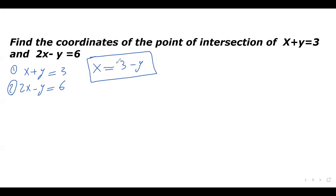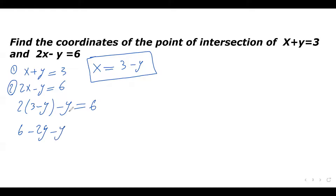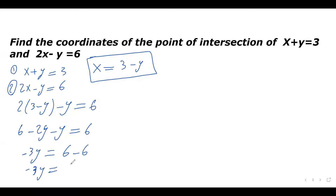Step two: substitute this expression for x into the second equation. In the second equation, replace x with (3 minus y): 2 times (3 minus y) minus y equals 6. Distribute the 2 into the bracket: 2 times 3 is 6, 2 times negative y is negative 2y, and we have another negative y on the left side, equals 6. Collect like terms: negative 2y and negative y add up to negative 3y on the left, equals 6. Move the positive 6 from the left to the right — it becomes negative 6. So negative 3y equals 6 minus 6, which is 0.